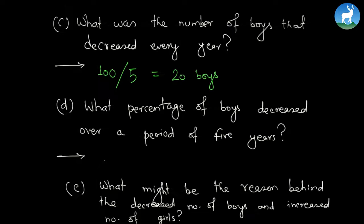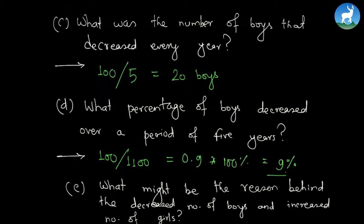Another question is: what percentage of boys decreased over a period of five years? For that you need to find the number of decreased boys, that is 100, divided by the total number of students which is 1100. That turns out to be 0.09, and if you multiply by 100 we have 9%. So roughly 9% of boys decreased over a period of five years.